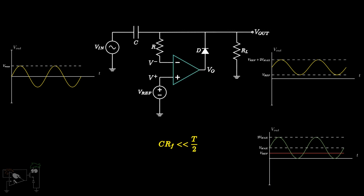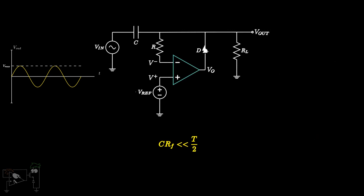We can make a negative clamper simply by reversing the polarity of the diode and applying a negative reference voltage as shown. The output waveform for the negative clamper will look like this.